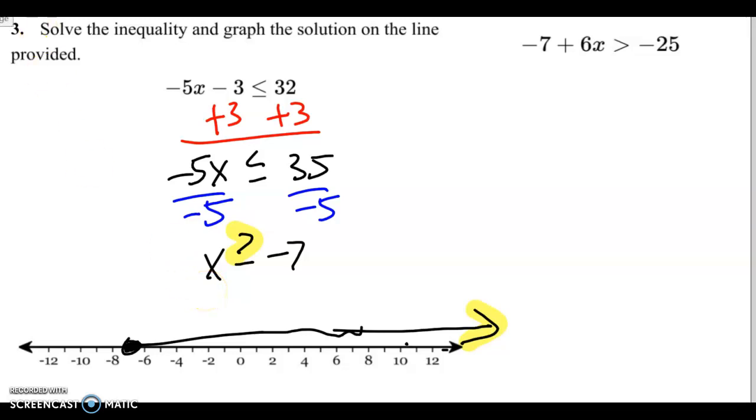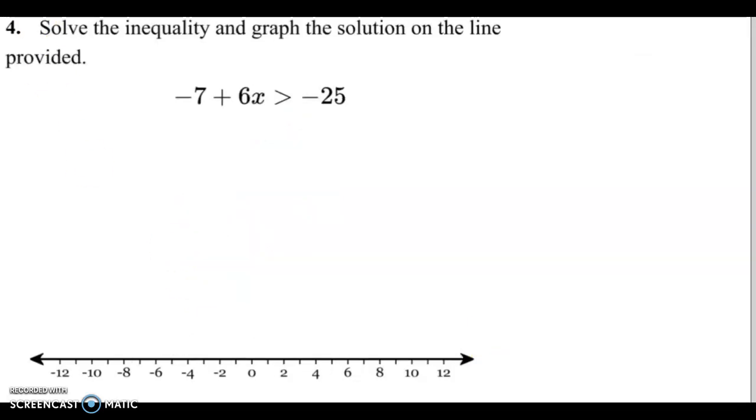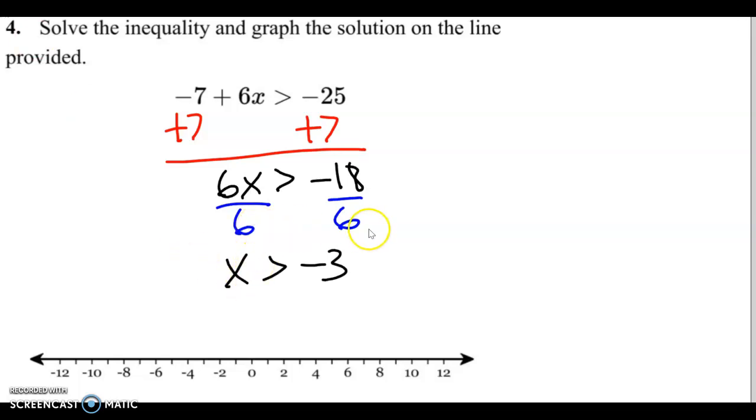Let's take a look at one more example. We're going to isolate the 6x. We'll do the opposite of minus 7 and add 7 on both sides. You got different signs, so you find the difference. 25 minus 7 is 18. 25 is bigger, so we leave it negative. We divide by positive 6 here. We're dividing into a negative, but we don't change the inequality around because we're not dividing by a negative.